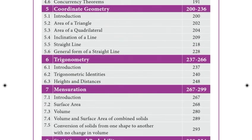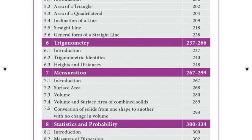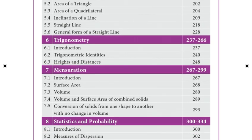The sixth chapter is Trigonometry, covering the general form of straight lines, trigonometric identities, and height and distance.